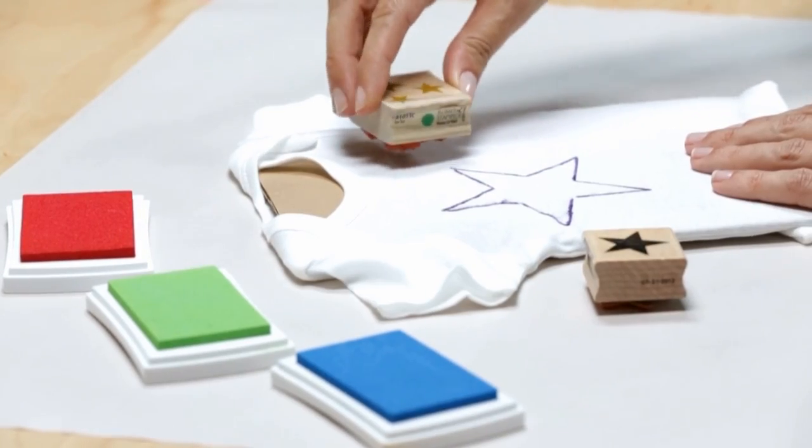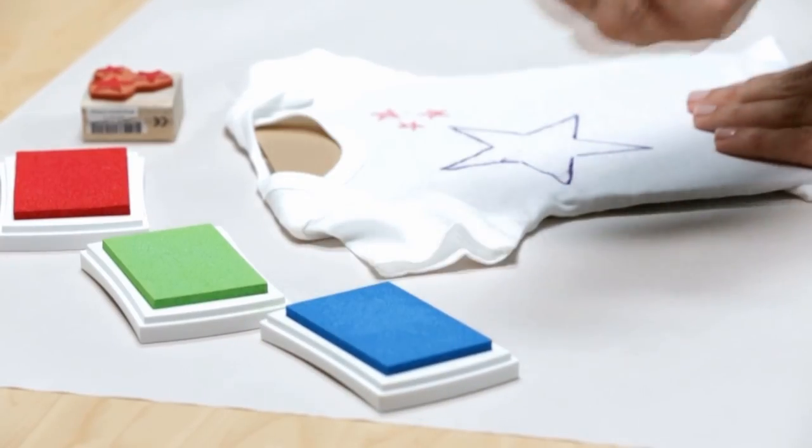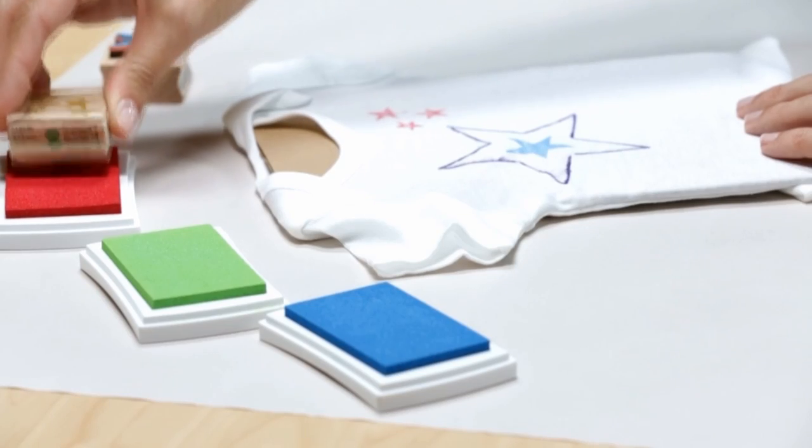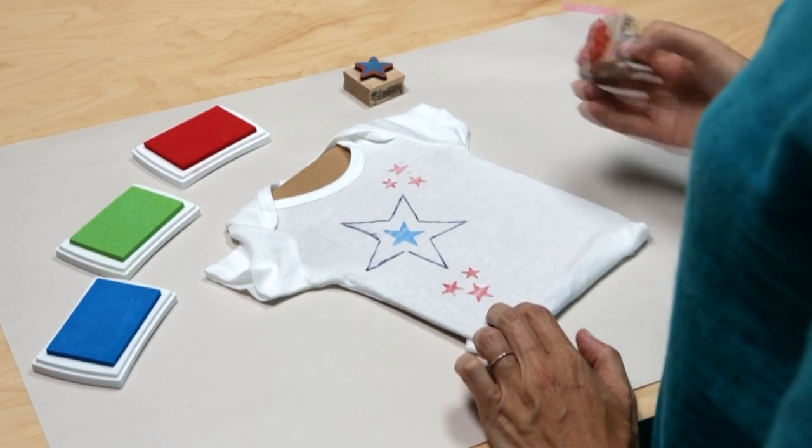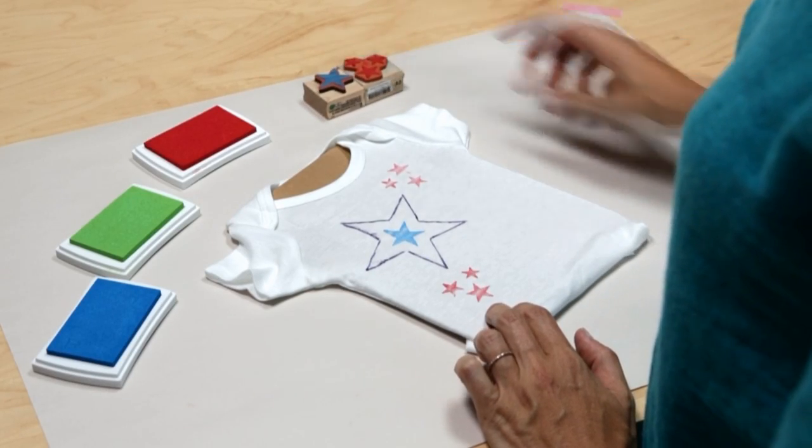To use the rubber stamps, stamp the letters and shapes with fabric ink pads and let them dry. Make sure to set the ink with an iron before washing.